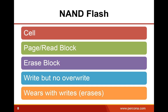There is something very particular about flash: we can write data to an area that was previously erased, but we cannot override that data directly. We have to go through an erase cycle. And with each erase cycle, flash wears over time. There is a very limited number of times we can erase a given cell before it degrades.